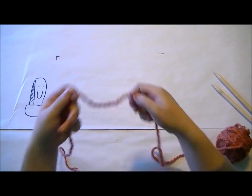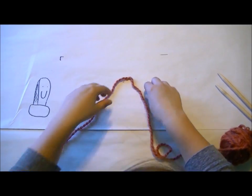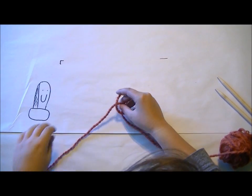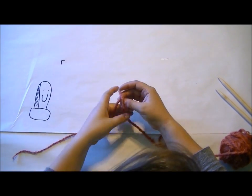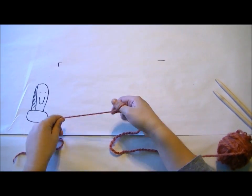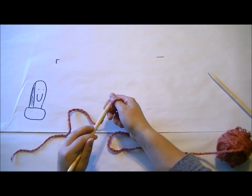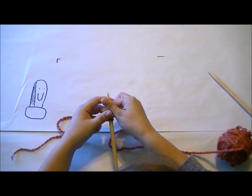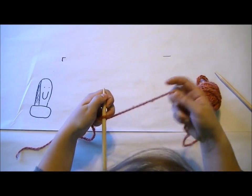So long tail cast on. You're first going to make your slip knot and make sure to leave a tail of dead yarn at least six inches. It's the name long tail. Squeeze that. We got our slip knot on. Now it's time to cast on stitches.